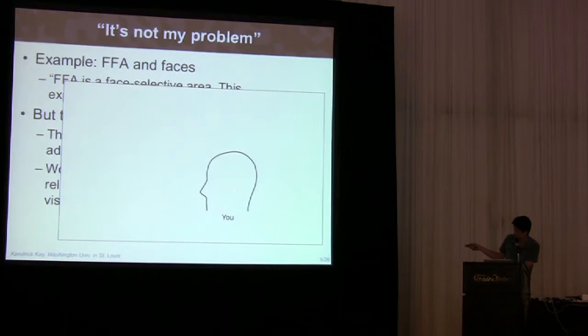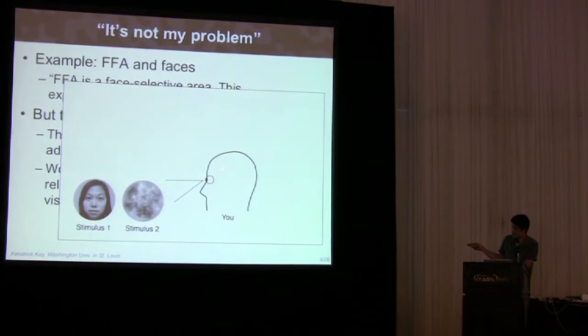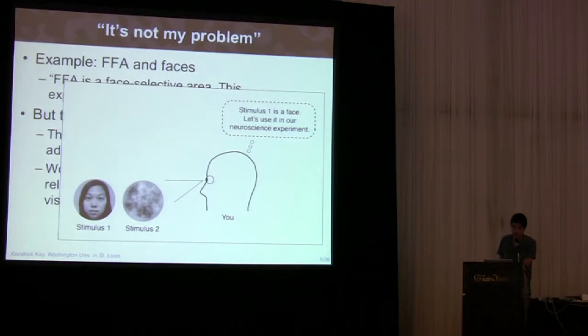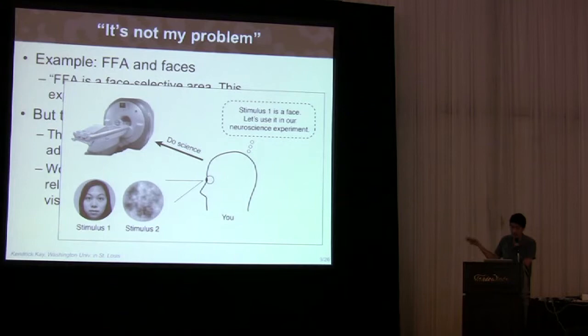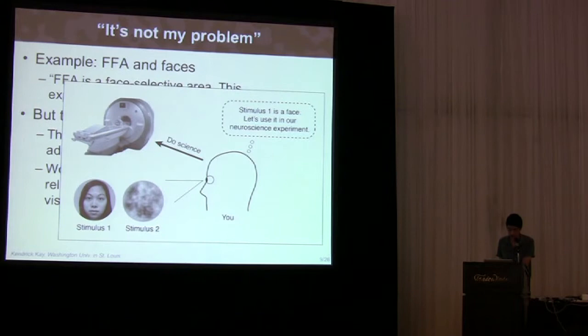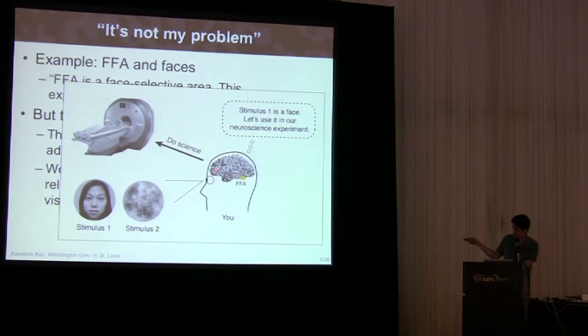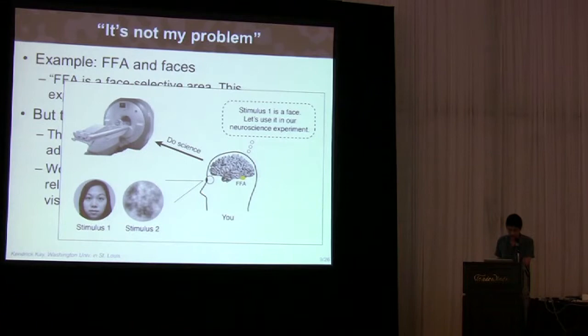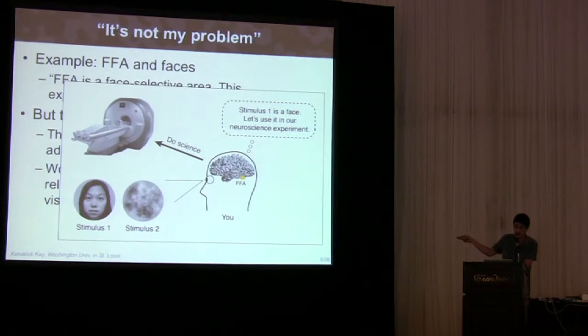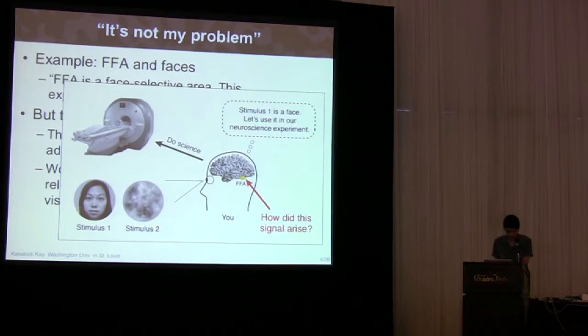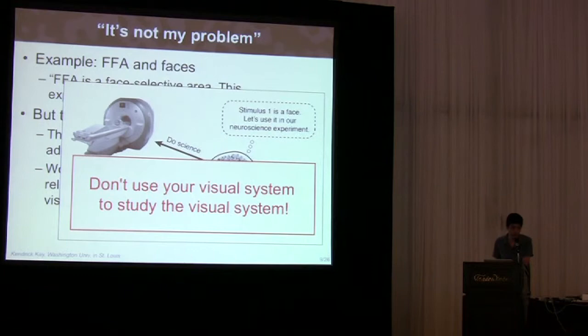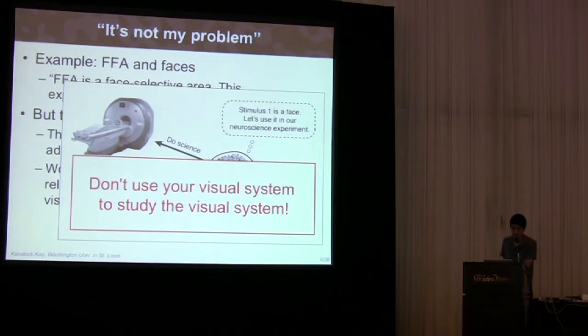The second issue is a little more subtle, and it has to do with the fact that faceness is a construct of our own visual system. Let's look at a little cartoon here. This is you. You have some eyes, and you're looking at these two stimuli. Using your brain, you can realize that stimulus one is a face, and then you can use that in your favorite neuroscience experiment. Everything seems fine, but let's think about what has happened. We have this word, face, and we're just using our own visual system to decide what stimulus to apply it to. But there's something a little circular here. The only reason we can do this is because we have a visual system, and presumably an FFA that's activating in response to the stimulus. The key question that's not answered is how did this activation arise? How did these neurons in this particular brain area make this decision?